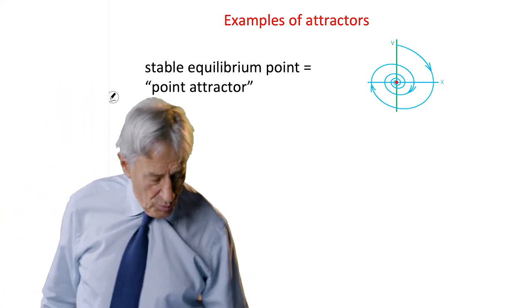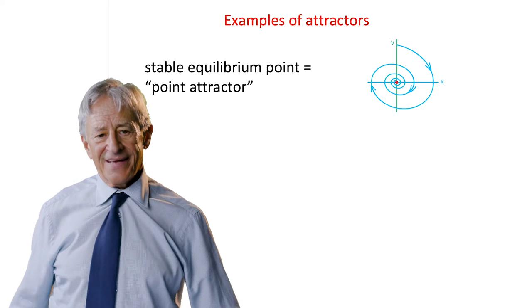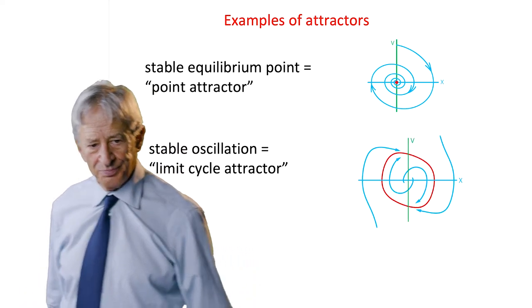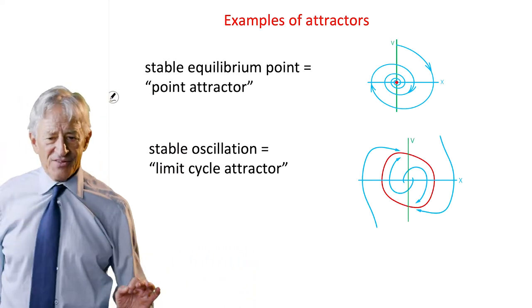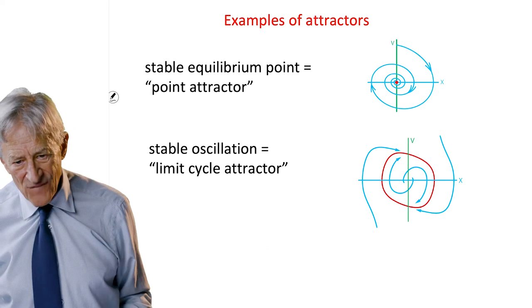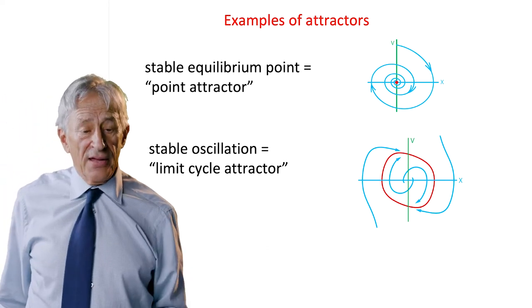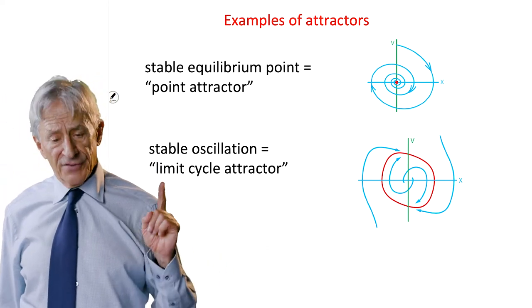Now, we have a second example. A stable oscillation, like we just saw, is another kind of attractor.